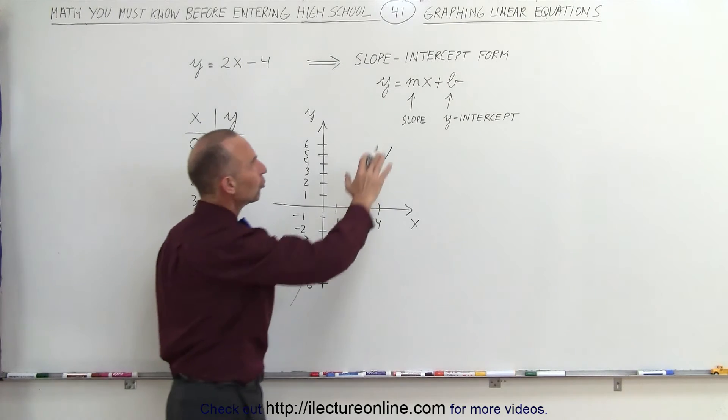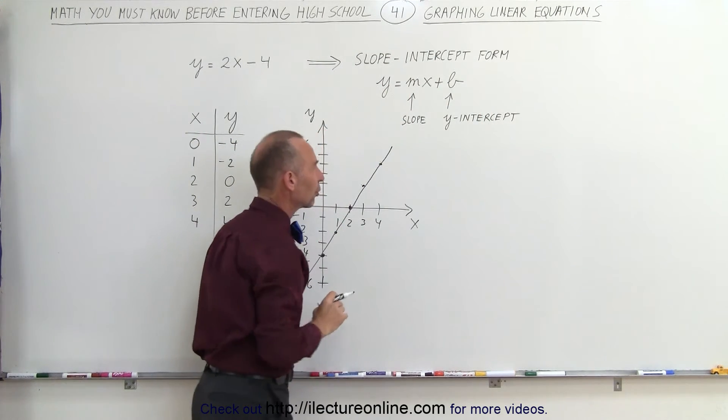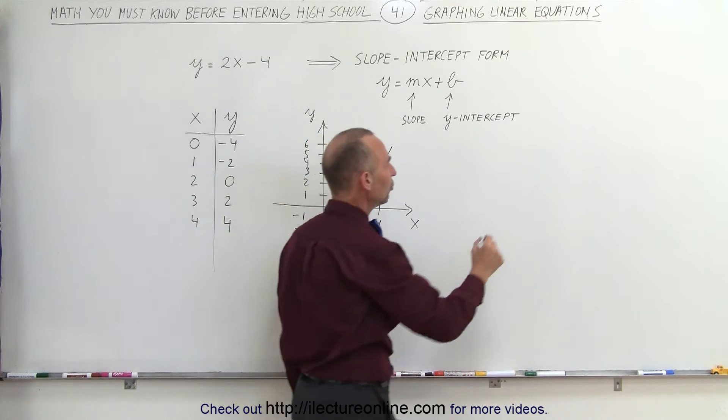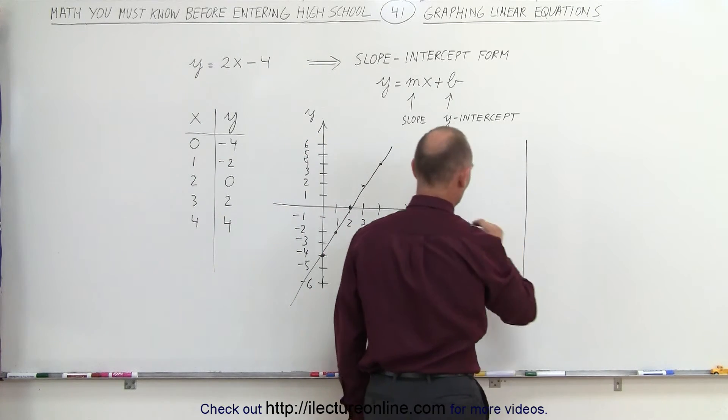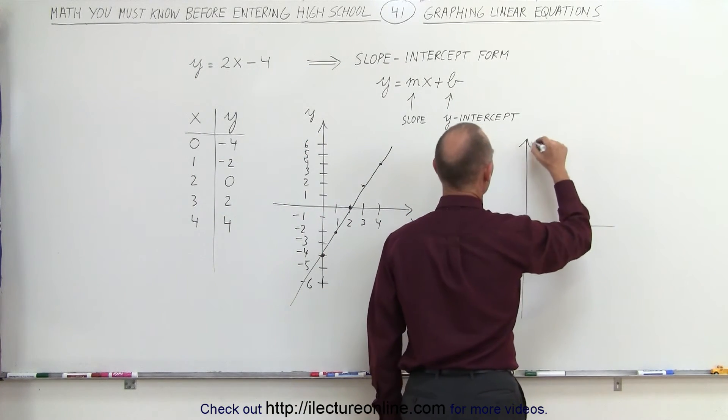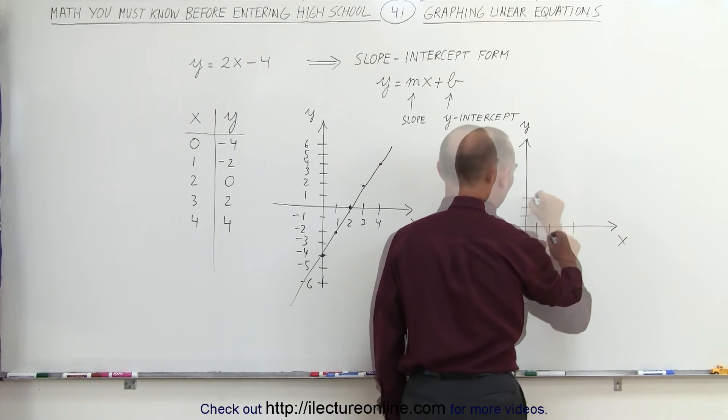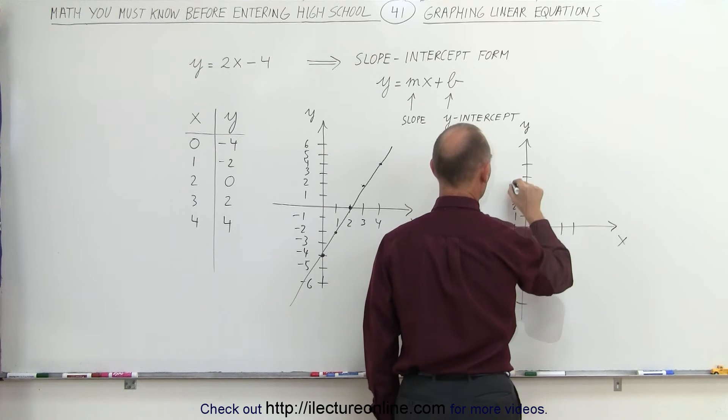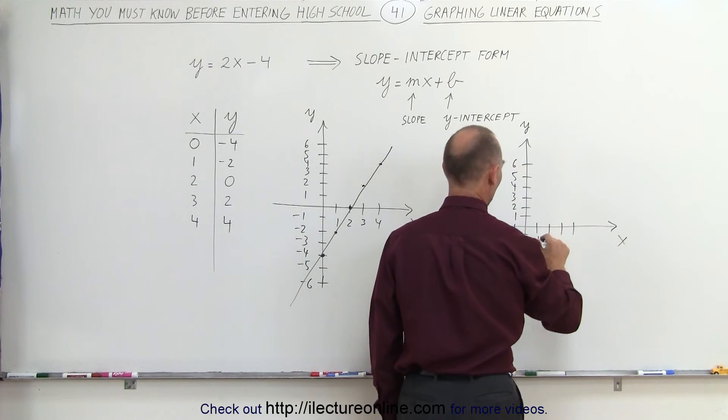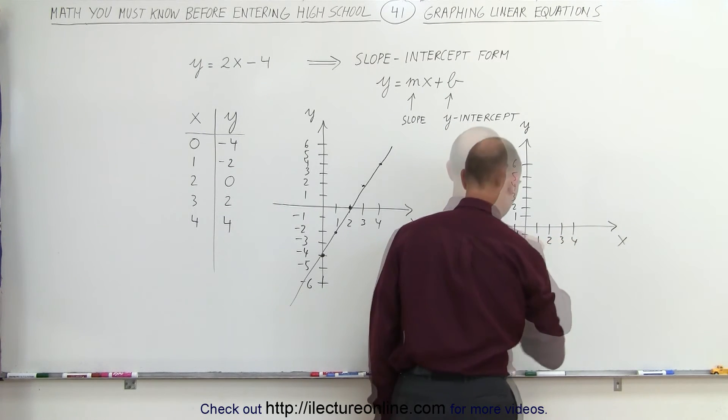We can also use what we call the slope-intercept form to graph linear equations. We can draw an xy coordinate system. There's my y-axis, there's my x-axis. We have 1, 2, 3, 4 on both axes.